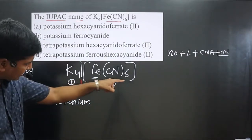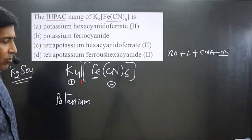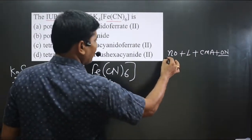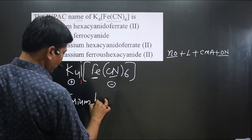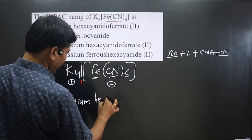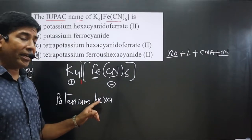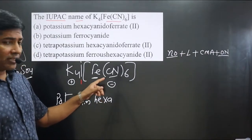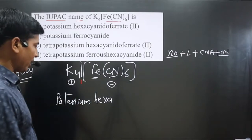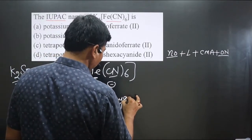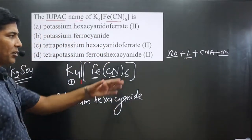Next, we name the complex part. There is only one type of ligand — cyanide ion — and there are six of them, so we write 'hexa'. The cyanide ion is a negative ligand and its IUPAC ligand name is 'cyanido'. So we get 'hexacyanido'.